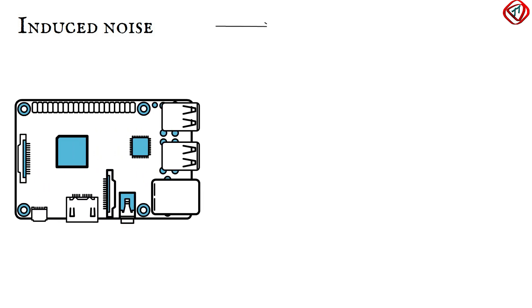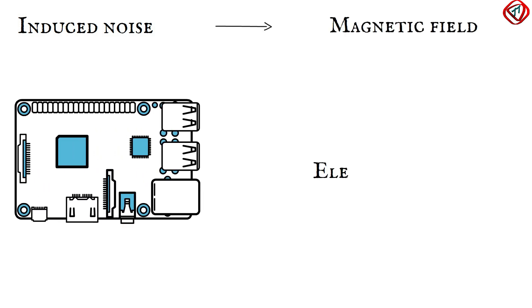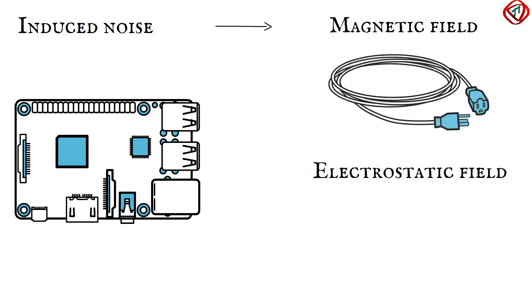Induced noise is the noise generated in a circuit by varying magnetic and electrostatic fields produced by another circuit. For example, AC power cables produce magnetic fields, and fluorescent lights produce electrostatic fields. Once this electrostatic or magnetic energy gets in the equipment, the energy is converted to noise, called induced noise.